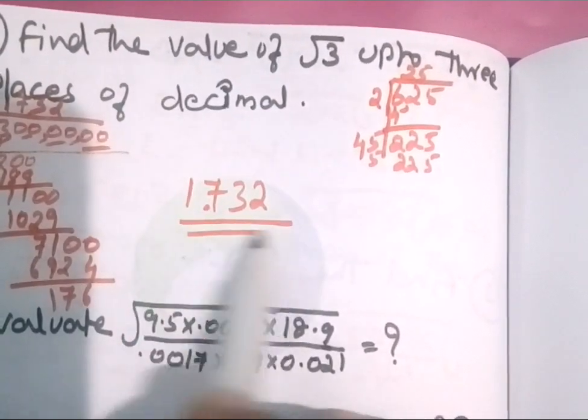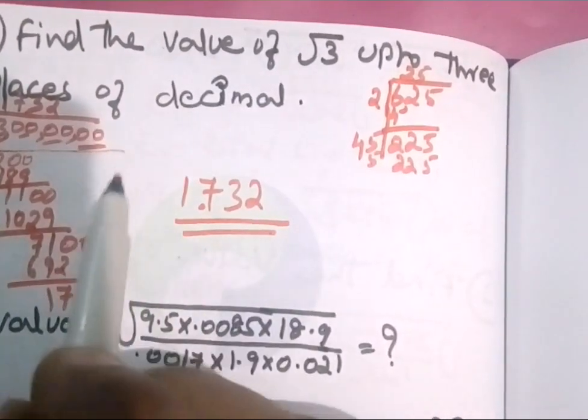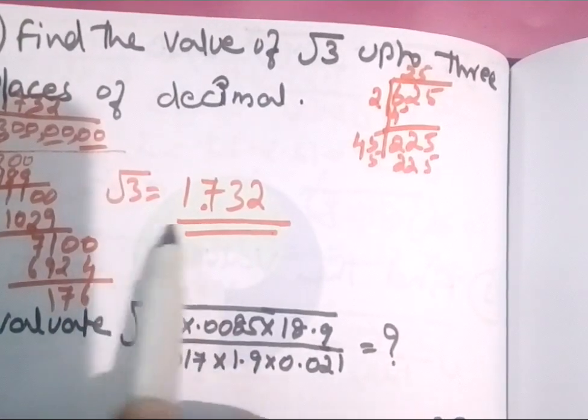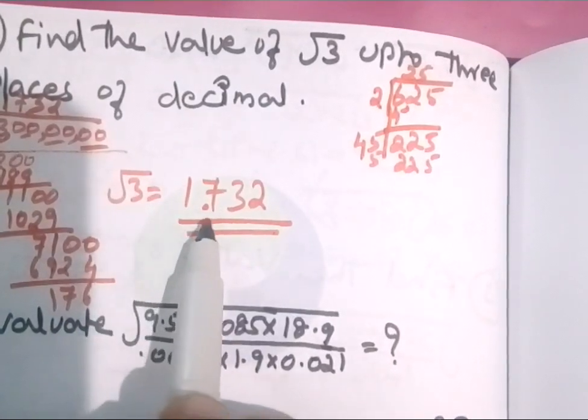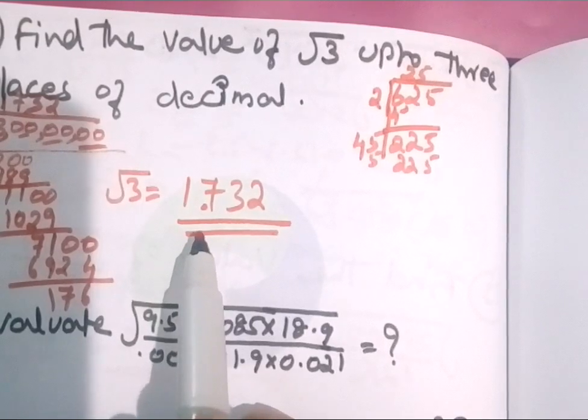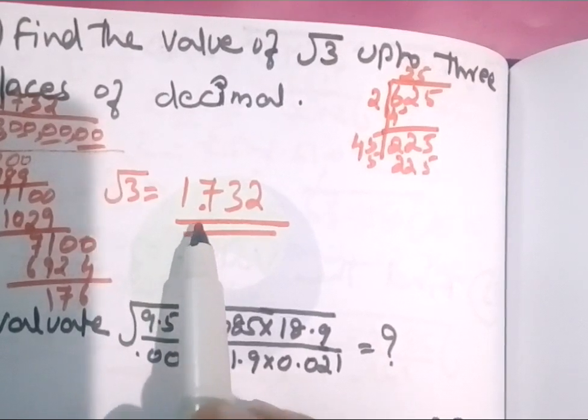The result is 1.732. So the square root of 3 is approximately 1.732.